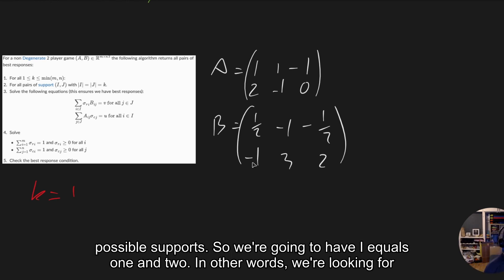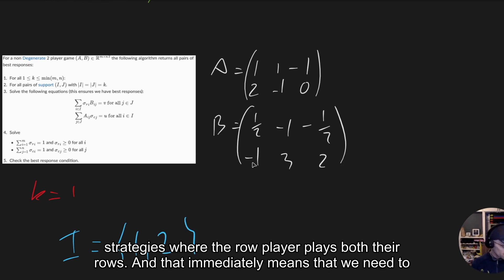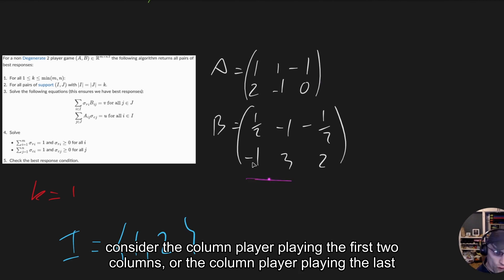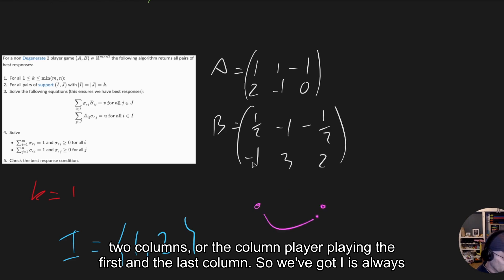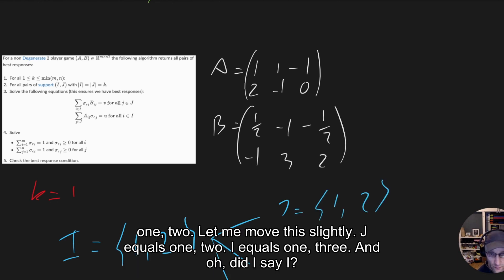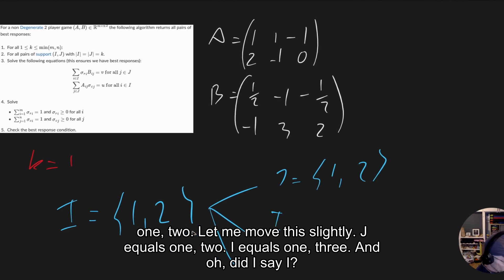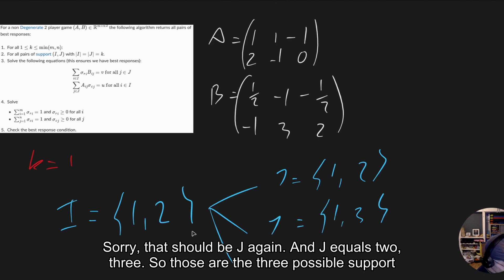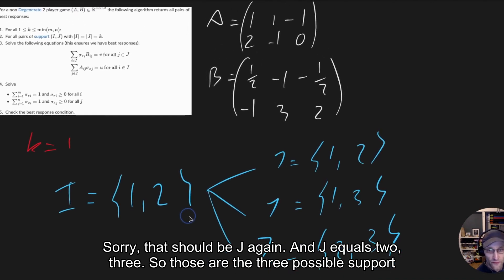We start by writing down the possible supports. We have i equals 1 and 2, meaning we're looking for strategies where the row player plays both rows. That immediately means we need to consider the column player playing columns 1 and 2, columns 1 and 3, or columns 2 and 3. So we have three cases: j equals 1,2; j equals 1,3; and j equals 2,3.